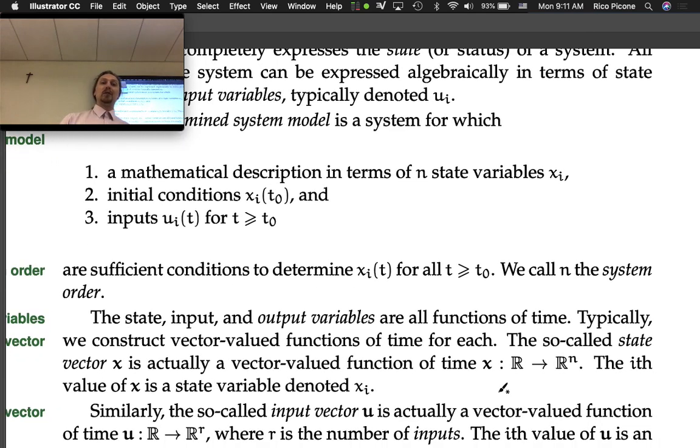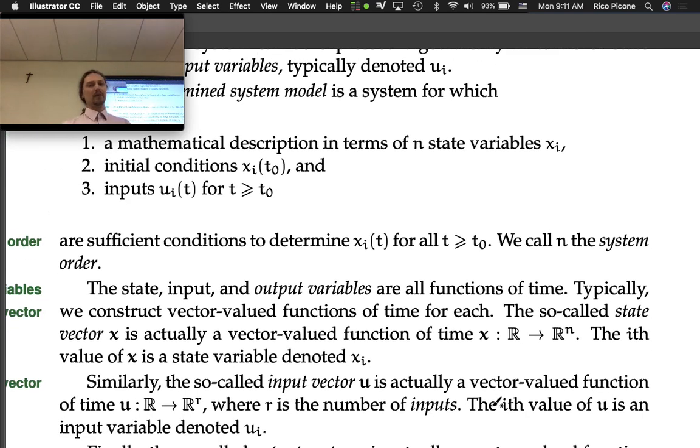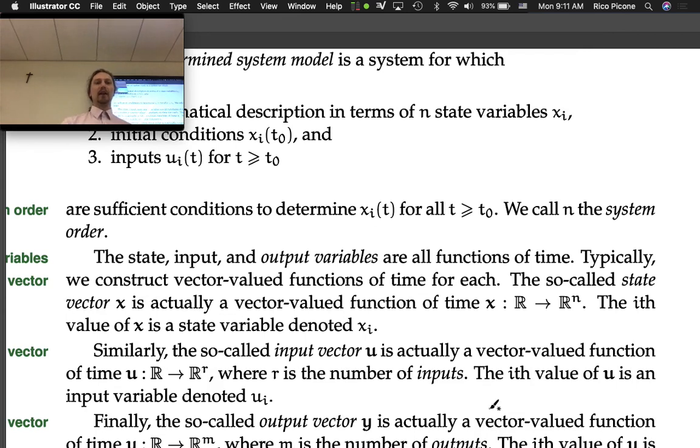The state, input, and output variables are all functions of time. We construct vector-valued functions of time for each. The so-called state vector x is actually a vector-valued function of time that takes in a value of time and returns a vector. The i-th value of x is a state variable denoted x_i.